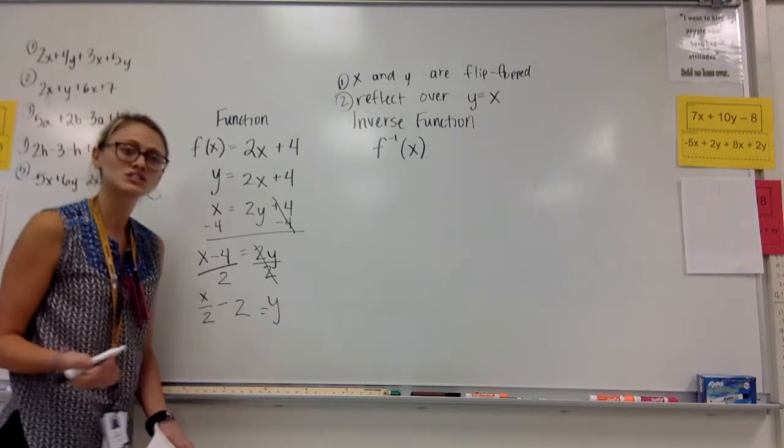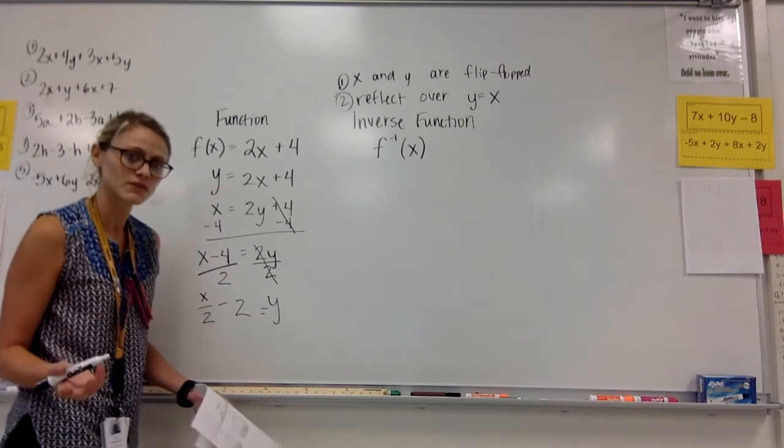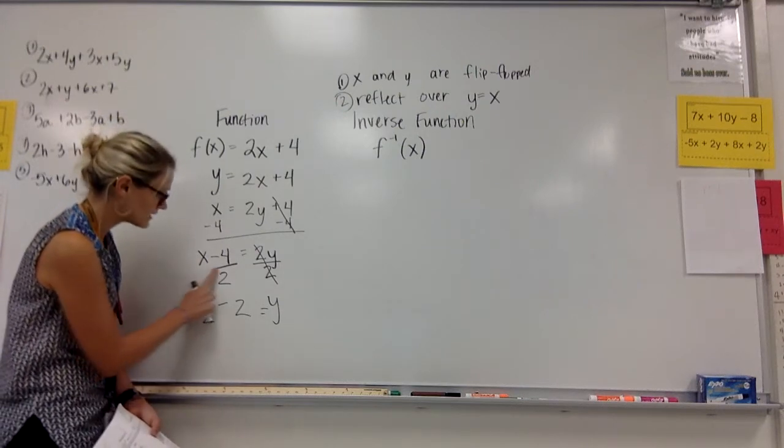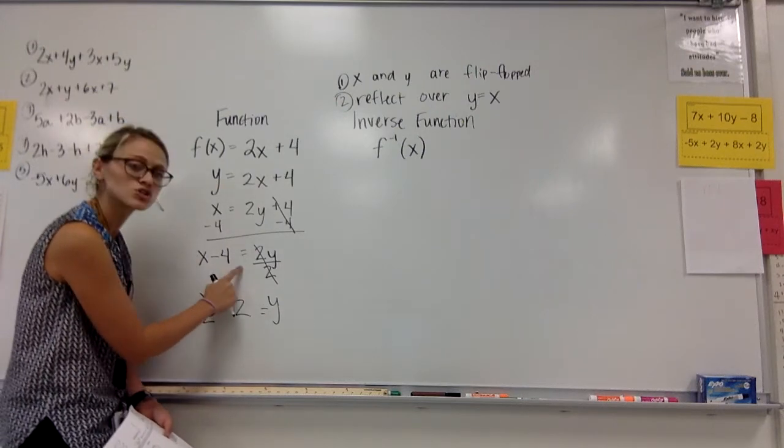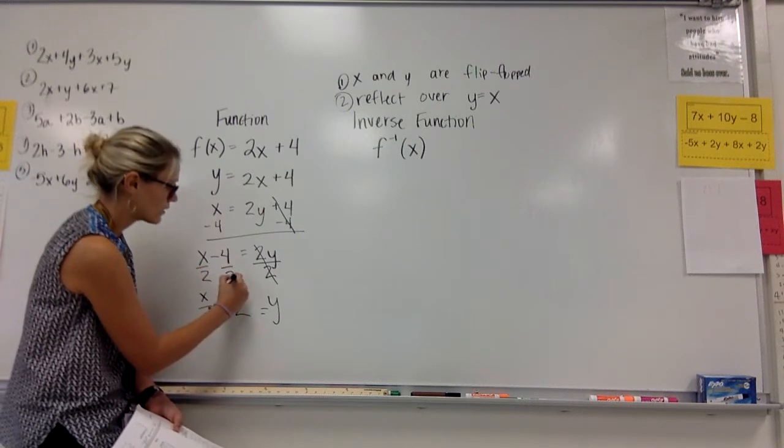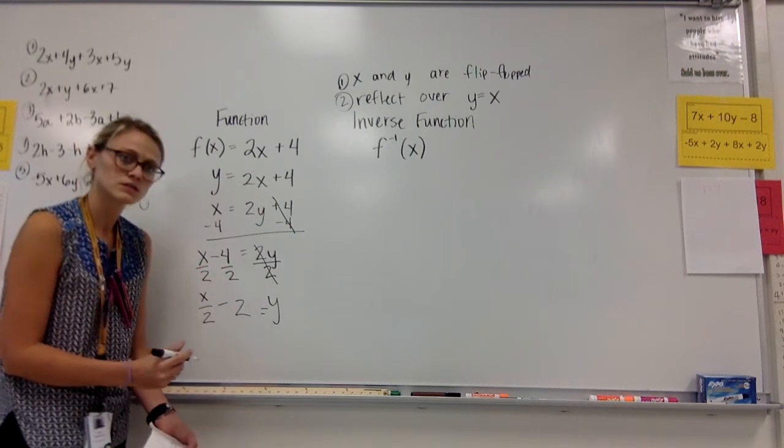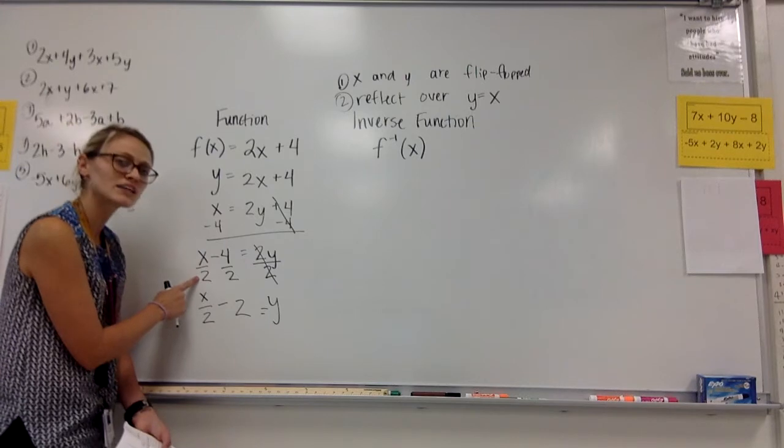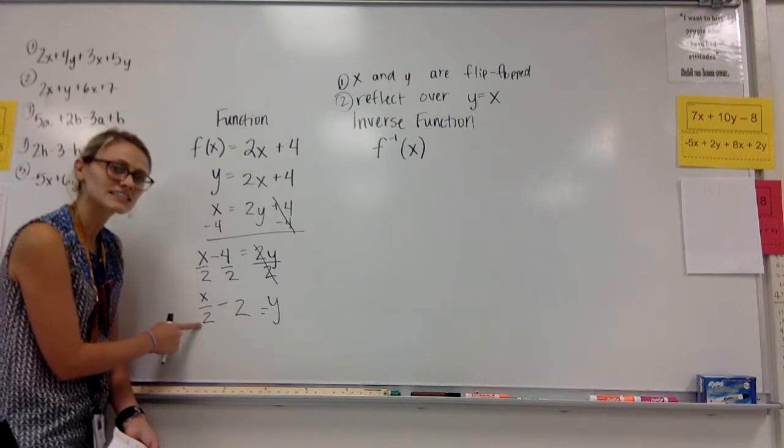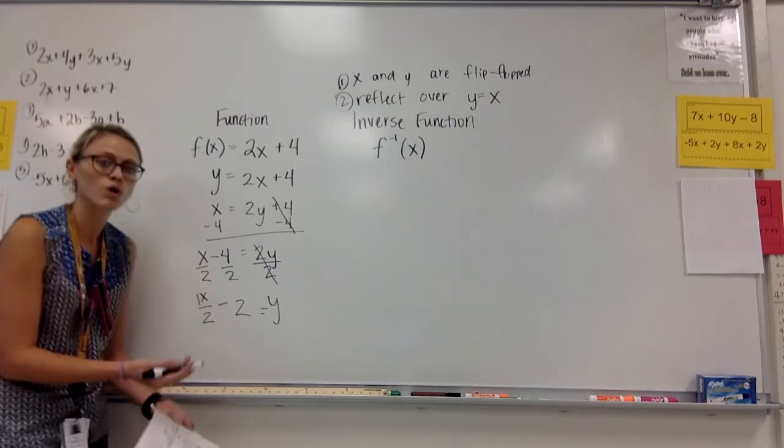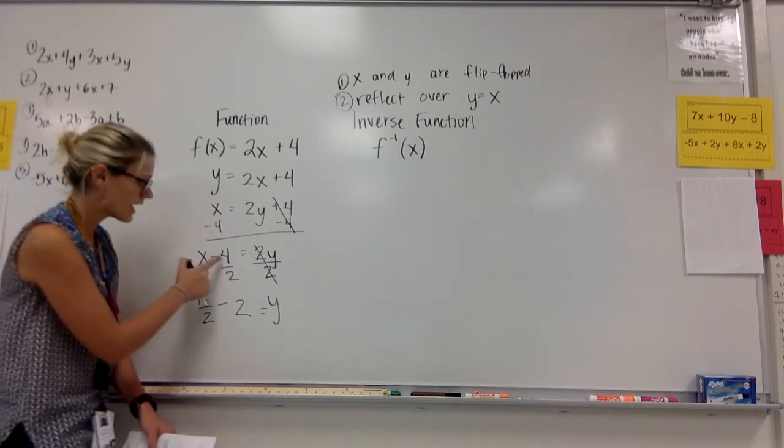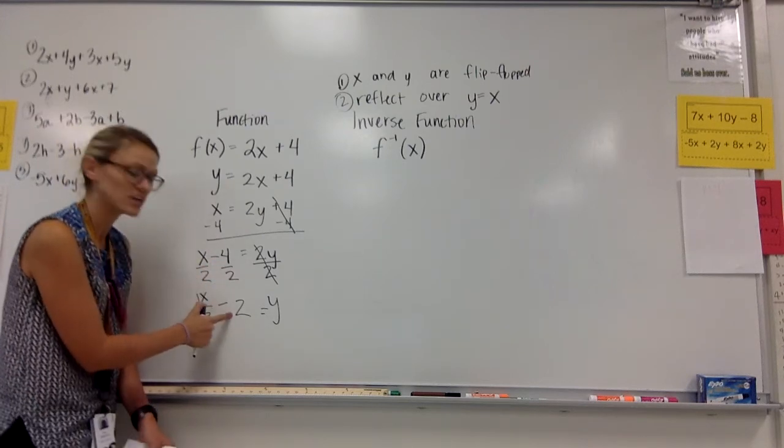Okay? So I didn't mention this. Hopefully you guys can remember this from algebra. When I divided up here by 2, I divided both of those terms. So I had to divide the x by 2. That's how I got x over 2 or 1 half x and 4 over 2, which gave me my minus 2.